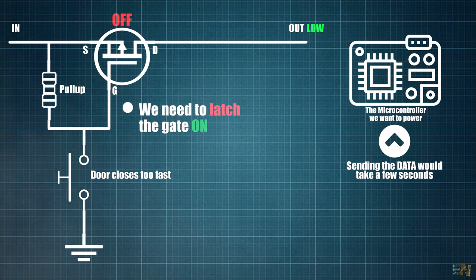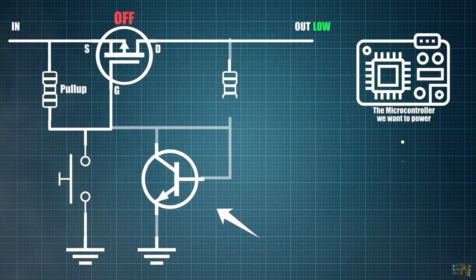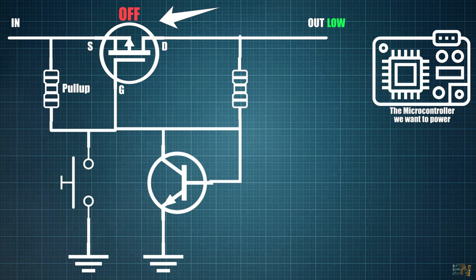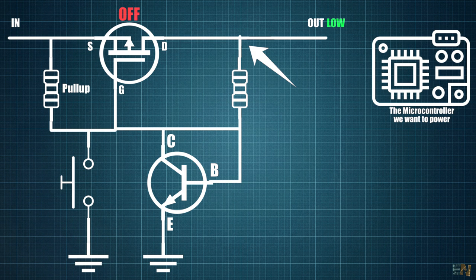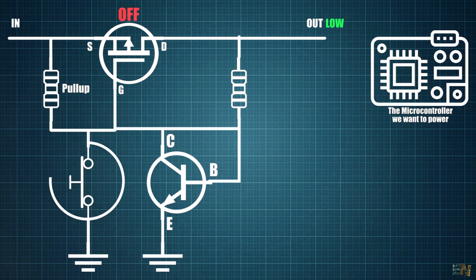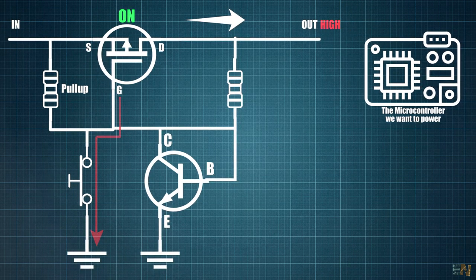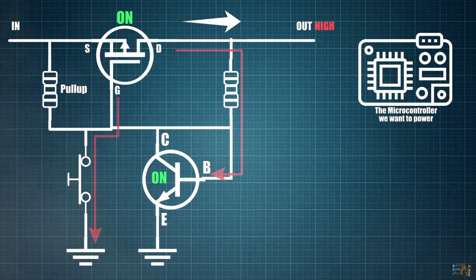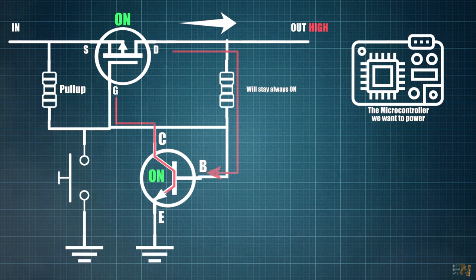But what if the door closes in under a second and the microcontroller doesn't have enough time to send the data to the internet? We need to make the MOSFET gate latch into the ON position. So let's add another BJT transistor between the gate and ground. In this case, we use a P MOSFET so we activate it with a low signal. This BJT transistor has the base connected at the output of the MOSFET. So now when I close the switch from the door, the MOSFET will activate so the output is high, but at the same time that output will now turn ON the BJT transistor. So now even if the detector from the door turns back to open, the MOSFET will still turn ON.